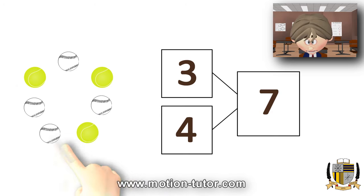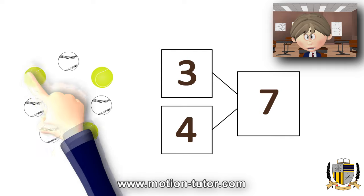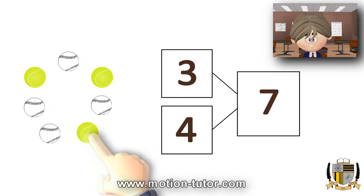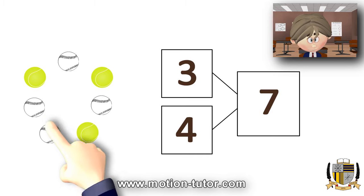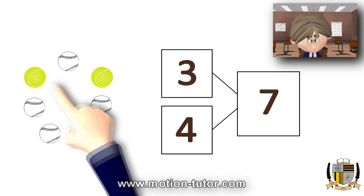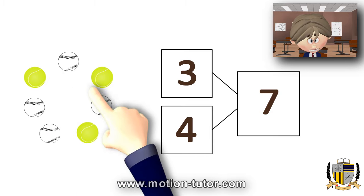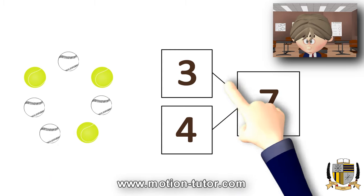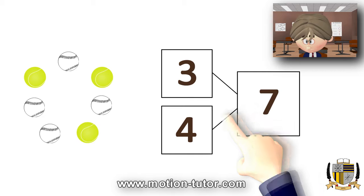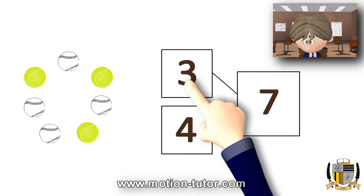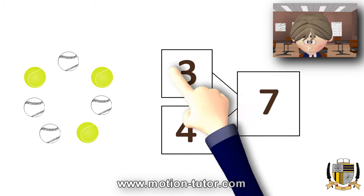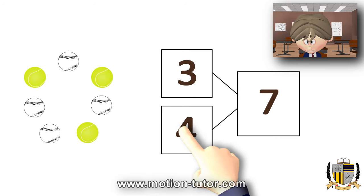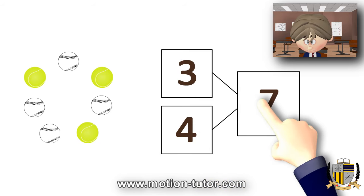So you see how this image tells the story? What this image is saying is we have seven balls, in which three are tennis balls and four are baseballs. And here is the number bond that represents it. Here's three for the tennis balls, here's four for the baseballs, and together, seven balls.